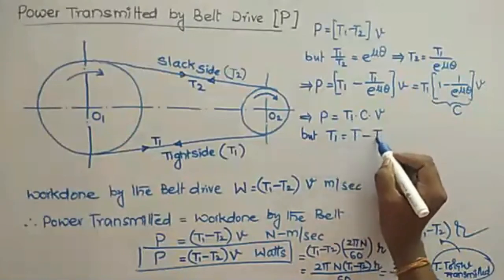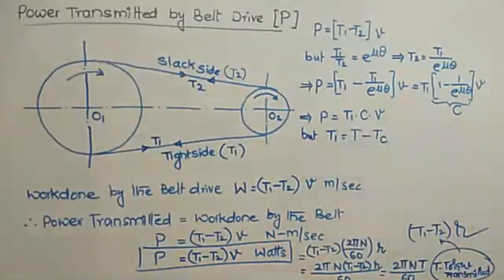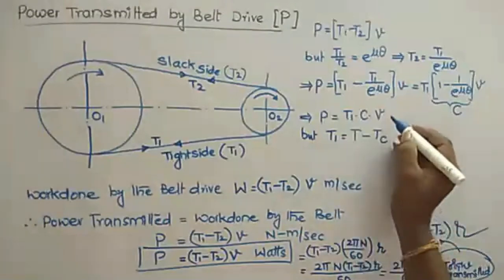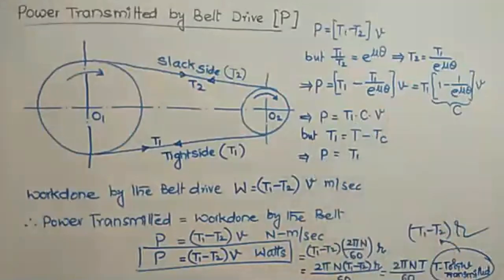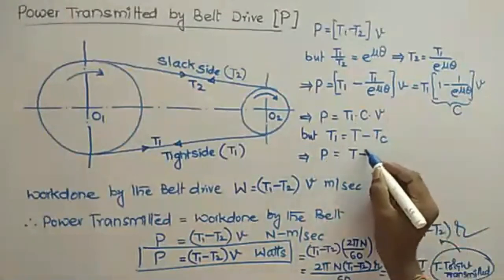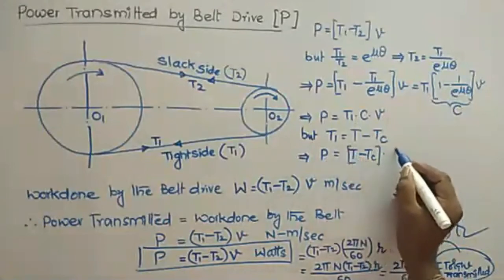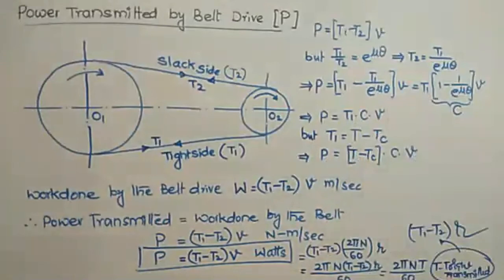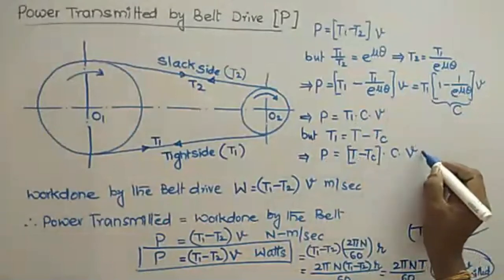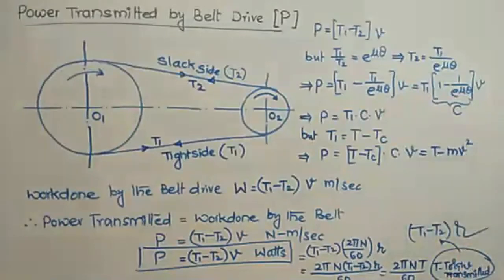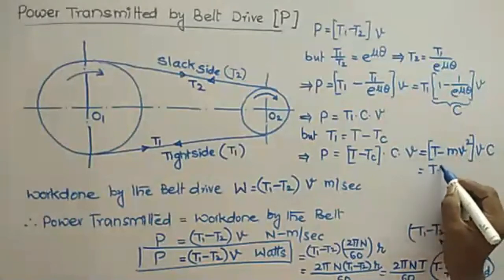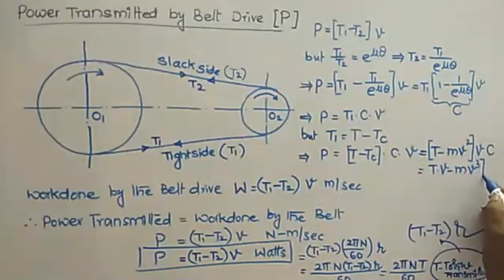Now, T1 equals the maximum tension in the belt minus the centrifugal tension Tc. Substituting: P equals (T minus Tc) times C times v. Since centrifugal tension Tc equals mv² (where m is the mass of belt per unit length), we get P equals (T minus mv²) times C times v, which simplifies to P equals (Tv minus mv³) times C. This is the power transmission equation in terms of the variable v — the belt velocity.